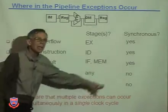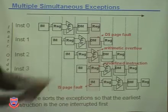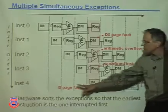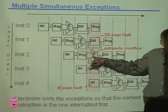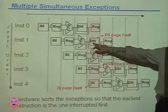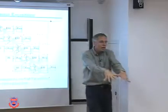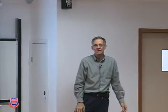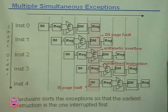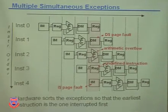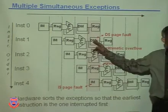You should be aware that multiple exceptions can happen in any one clock cycle. For example, with five instructions all in the pipeline: one just fetched and caused an instruction reference page fault; one is decoding and found an undefined instruction; one in the execute stage had an arithmetic overflow; one in memory caused a data page fault — four exceptions all at once. The hardware has to sort out which one to handle first, and the earliest instruction gets serviced first.